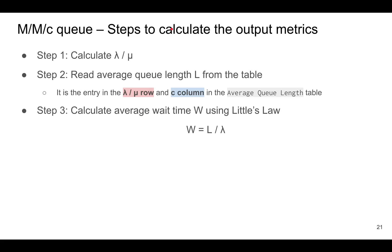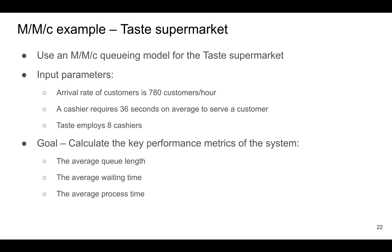So how can you calculate the output metrics of interest? These are the three steps: first, calculate lambda divided by mu; second, read the table to find the average queue length L; and third, calculate the average wait time W using Little's Law. Let's go through an example to make it clear.